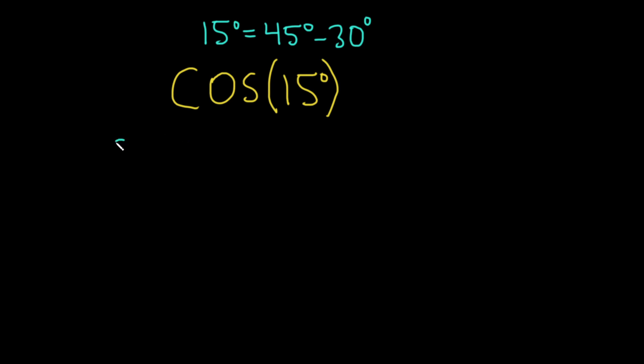So the identity we're going to use tells us that the cosine of A minus B is equal to the cosine of A times the cosine of B plus the sine of A times sine of B.